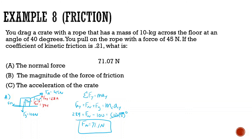Part B: the force of friction. Now that we have the normal force, the force of friction equals normal force times the coefficient of friction. Normal force is 71.1 and the coefficient of friction is 0.21, so force of friction equals 71.1 times 0.21, which is 14.9 newtons.